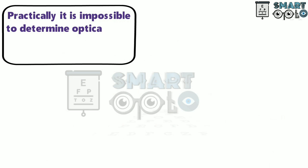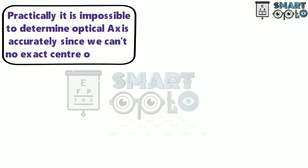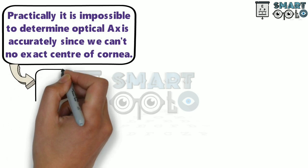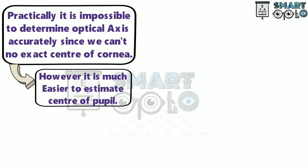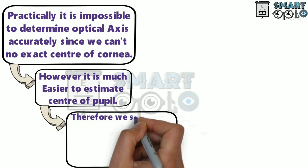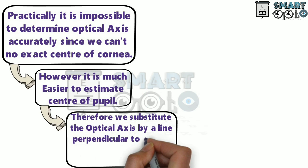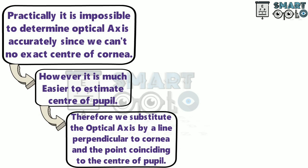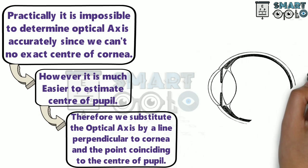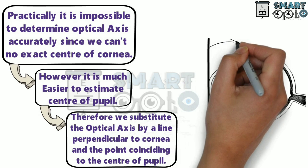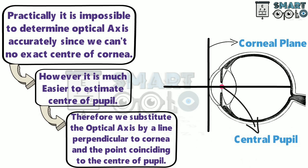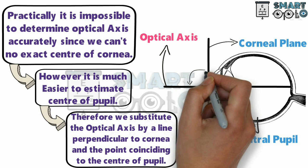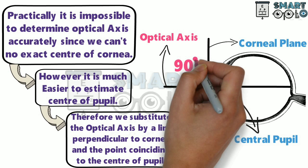Practically, it is impossible to determine the optical axis accurately since we don't know the exact center of the cornea. However, it is much easier to estimate the center of the pupil. Therefore, we substitute the optical axis by a line perpendicular to the cornea at the point coinciding with the center of the pupil. In this diagram, this is the corneal plane, this dot represents the center of pupil, and this is the optical axis. The optical axis and the corneal plane run perpendicular to each other, creating 90 degrees.